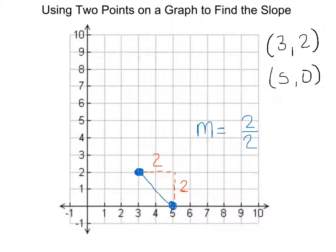So now when we look at that, we can reduce the 2 over 2, which is the same thing as saying 1. However, we're still not done. There's a critical piece here.